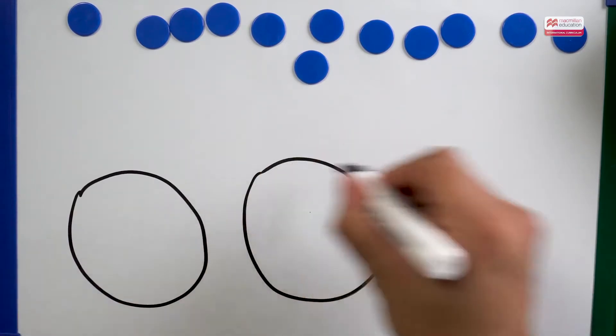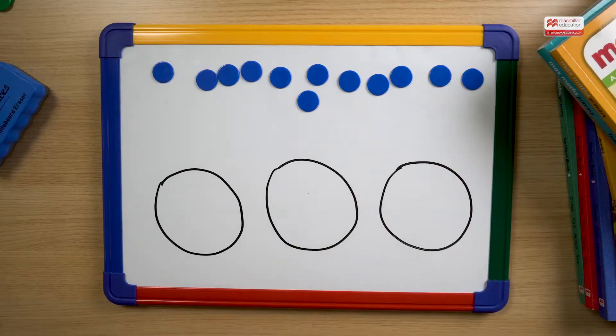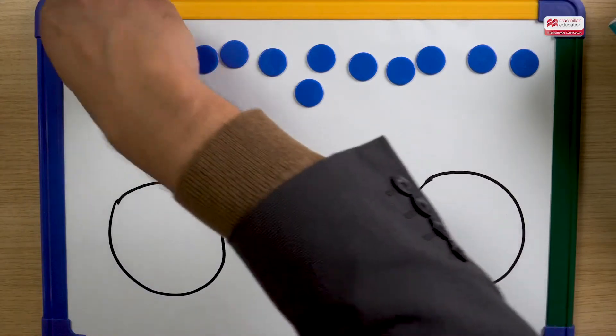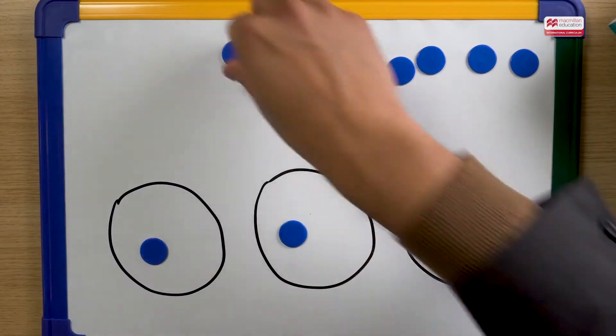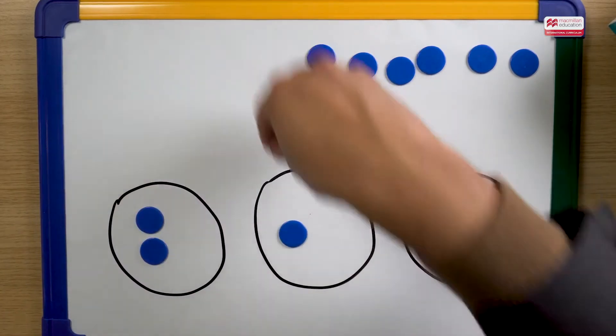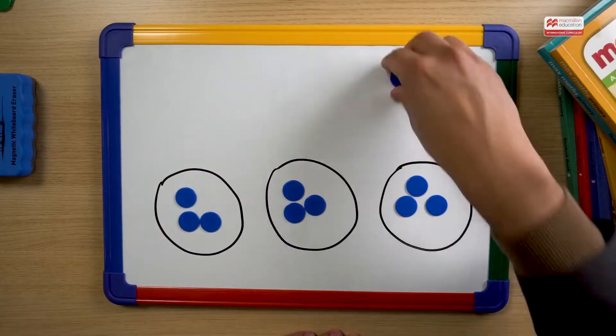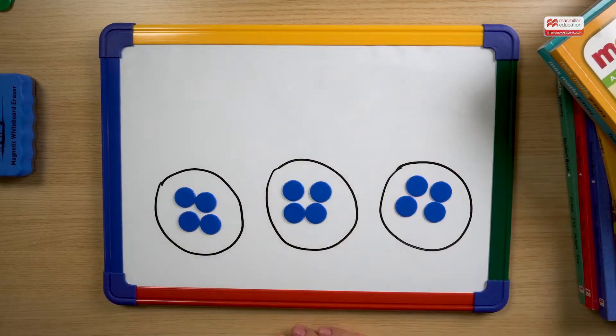One, two, three. These are my baskets. I might be asked to share 12 equally between the three baskets until all 12 of my counters are shared equally, like so.